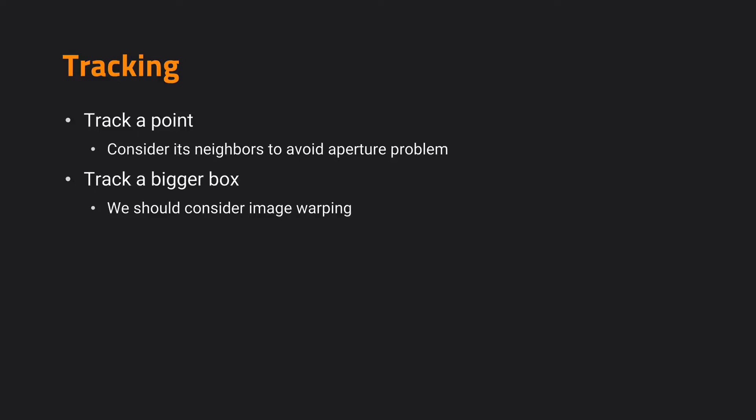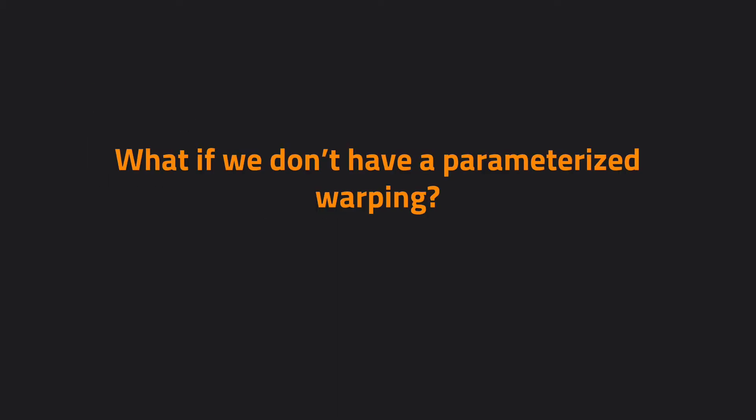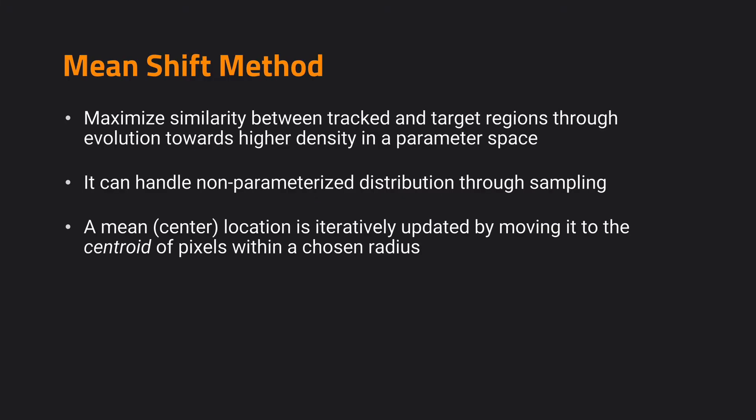So far, we have talked about how to track a point and how to track a bigger area while considering a parameterized image warping. What if we do not have a parameterized warping, or what if we do not know exactly how to warp from one image to the other? Here we can consider the mean-shift method.